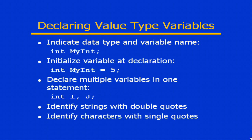To actually declare variables, we generally use a format where we define the data type and the variable name. For example, 'int myInt' specifies that the variable is of integer data type and the name is myInt. You can also initialize the variable when it is declared — 'int myInt = 5' would create an integer variable called myInt and assign the value 5 as its initial value.